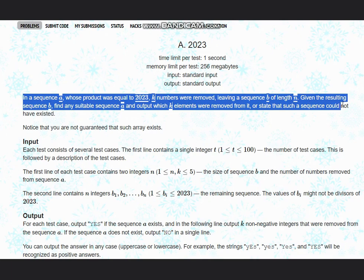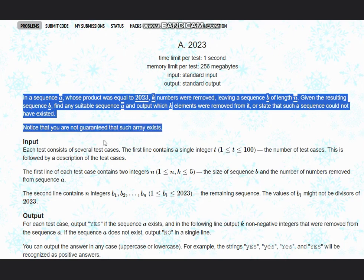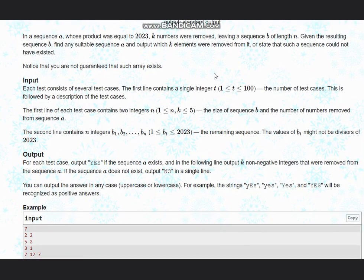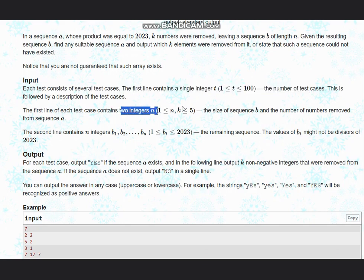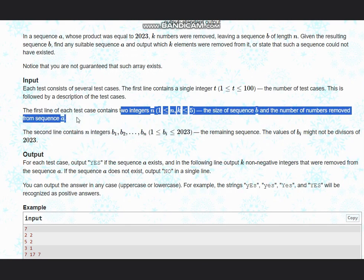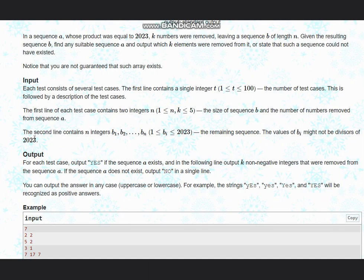Notice that you are not guaranteed that such array exists. In the first test case we have t number of test cases. Then we have two integers: n, the size of sequence b, and k, the numbers which were removed from sequence a. So we have n and k here, and b is the remaining sequence b1 to bn.